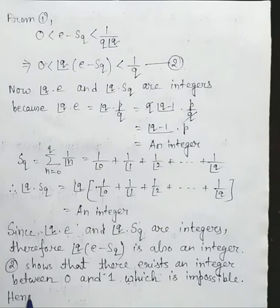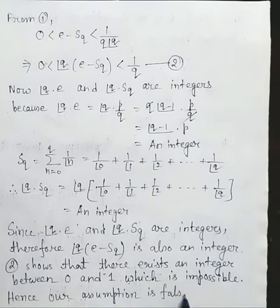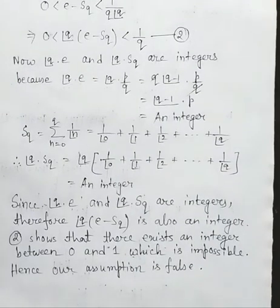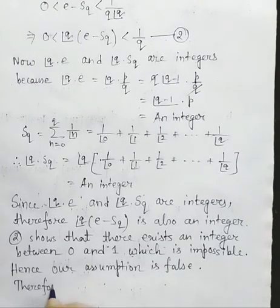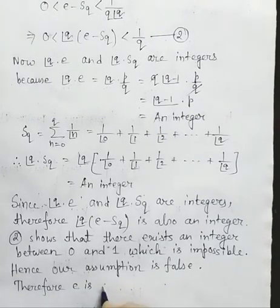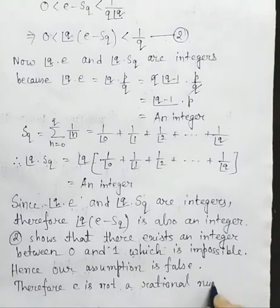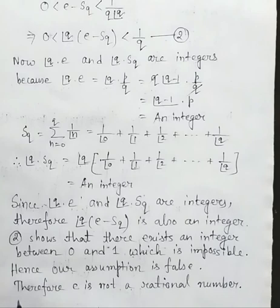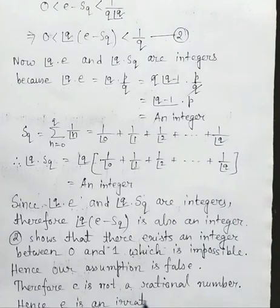Hence our assumption is false. We assumed that e is rational, but this is false. Therefore e is not a rational number. Hence e is an irrational number. Proof complete.